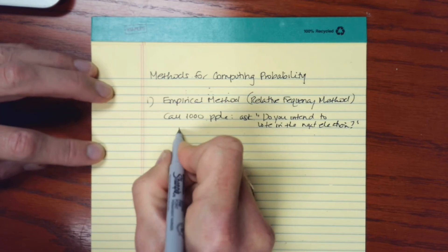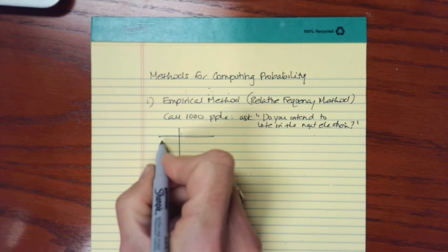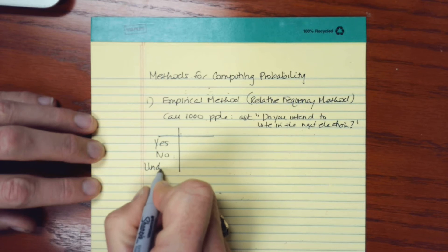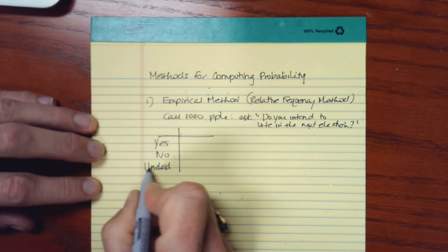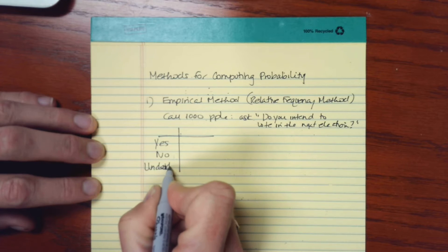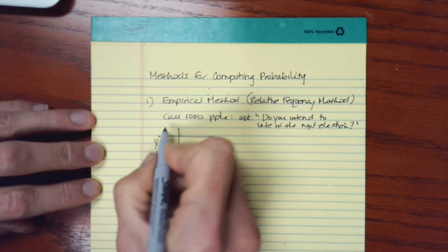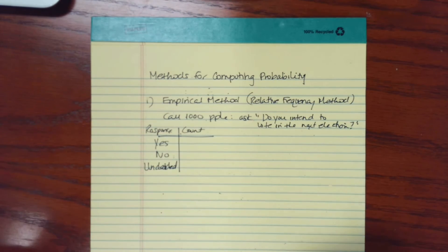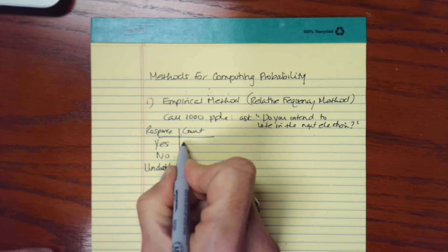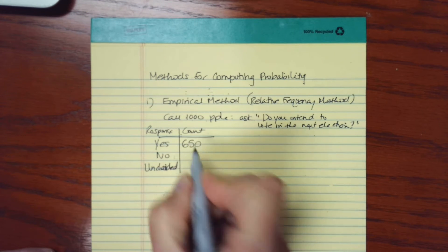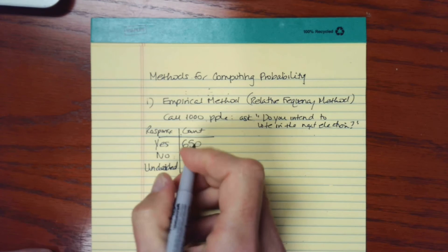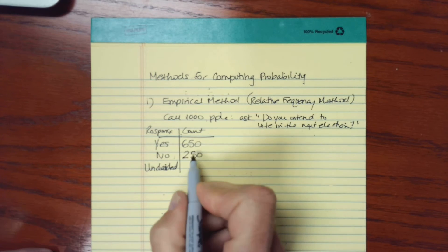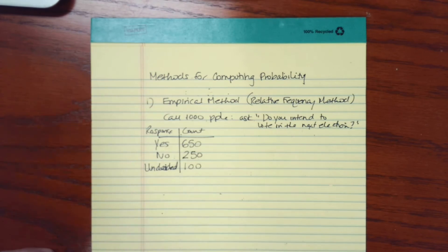We keep track of our results and give people the choice of saying yes they intend to vote, no they do not, or they are undecided. These are the responses and here's the count. Let's say there were 650 who said they do intend to vote, maybe 250 who said no, and that would mean 100 were undecided.